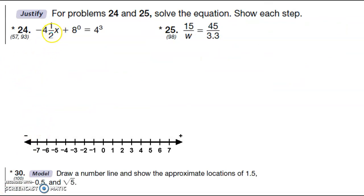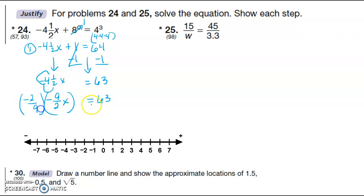So let's go ahead and we need to simplify this before we do anything else. Anything to the 0 is 1. So this is plus 1 is equal to, this is 4 times 4 times 4. So that's 64. So now we can do our two-step process. First step is we're going to get rid of the 1. And then we're going to popcorn this. 2 times 4 is 8, plus 1 is 9. Don't forget your negative sign. And we're going to multiply by the reciprocal. X is equal to 63 times negative 2 over 1 times 9. 63 times negative 2 is negative 126 divided by 9. I get negative 14.